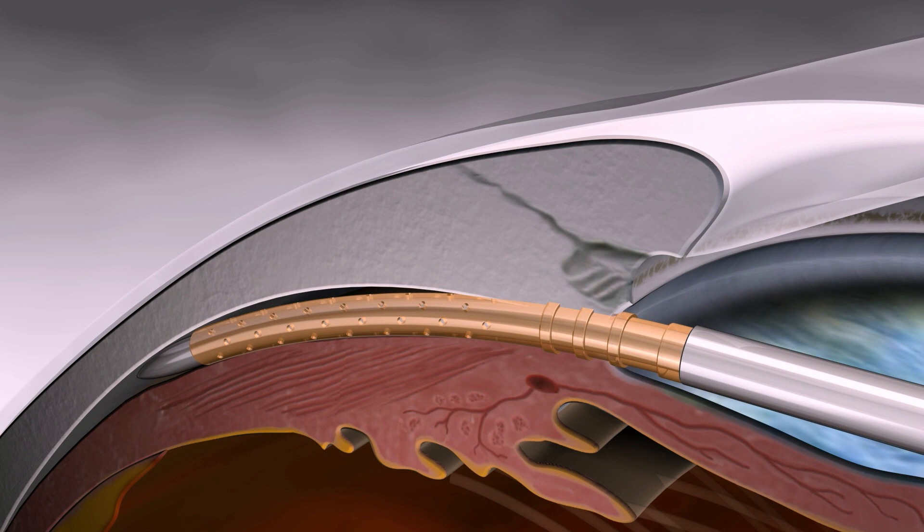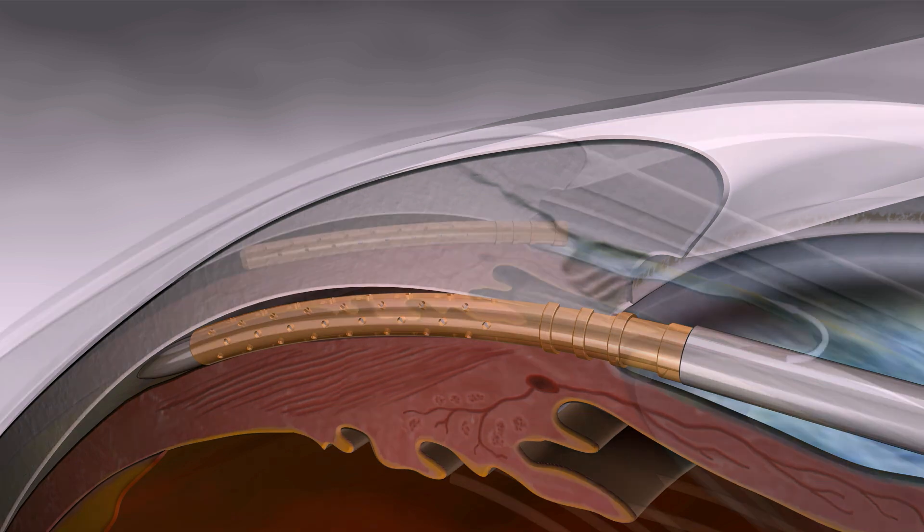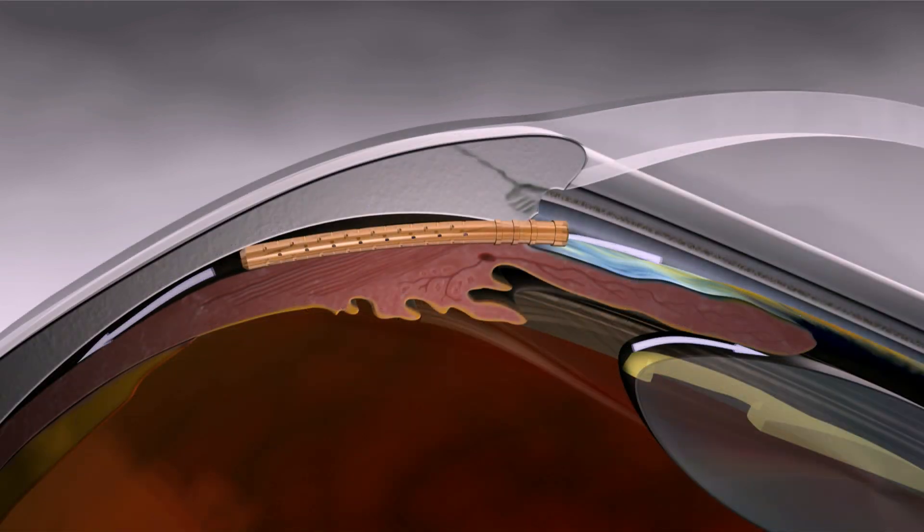Once the microstent is in its final desired implantation position, the guide wire is then retracted, and the Cypass Applier is removed from the anterior chamber.